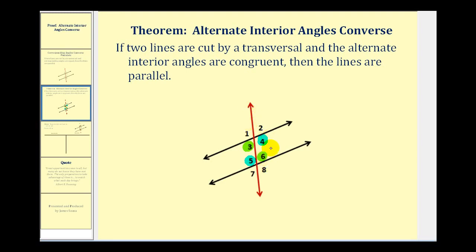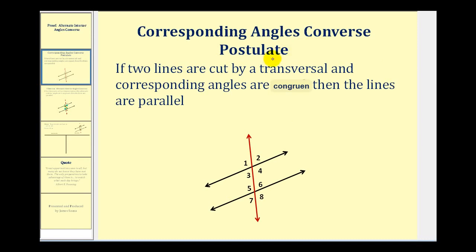The proof is going to be based upon the corresponding angles converse postulate, which states that if two lines are cut by a transversal and the corresponding angles are congruent, then the lines are parallel. So we're going to end up showing that the corresponding angles are congruent, and therefore by this postulate the lines will be parallel.